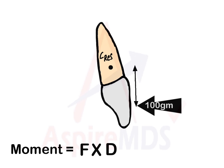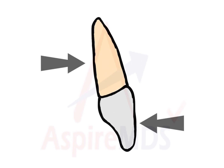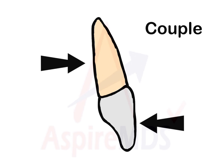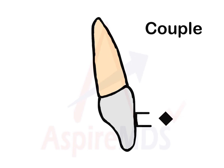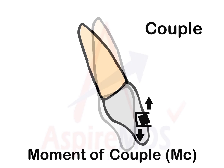For example, if 100 grams of force is applied at 10 millimeters from the center of resistance, the moment will be 1000 gram-millimeters. When two equal and opposite parallel forces that are not along the same line are applied on the tooth, they are called a couple. Clinically, this can be done by placing a twist in a rectangular wire that produces opposite forces — intrusive forces on the buccal aspect and extrusive forces on the lingual aspect of the bracket — giving us lingual root torque. This is known as moment of couple.